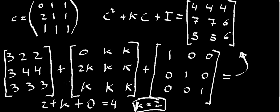If we check for another element, let's say this second row, first element, so element 2, 1, we have 3 plus 2k plus 0 equals 7. Let me write it here, 3 plus 2k plus 0 equals 7.